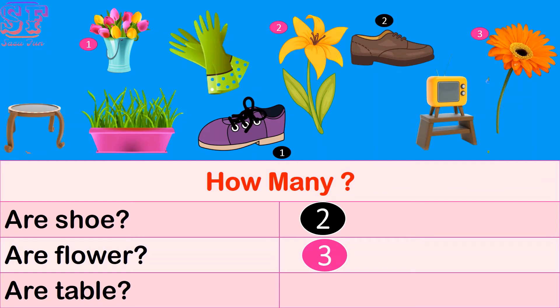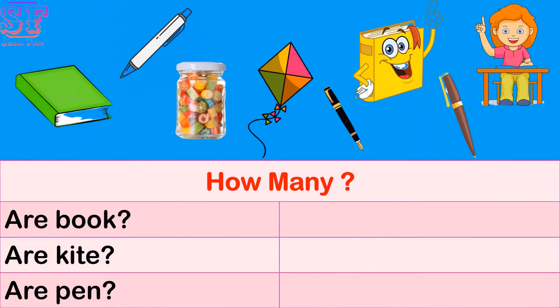Can you see? One, two — two tables. How many are books? Can you see? Yes, one, two — two books. How many are kites? One — one kite.